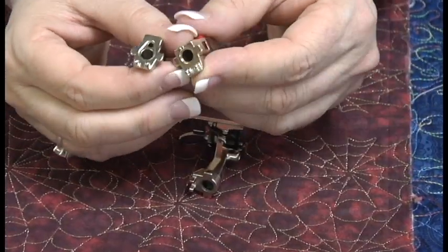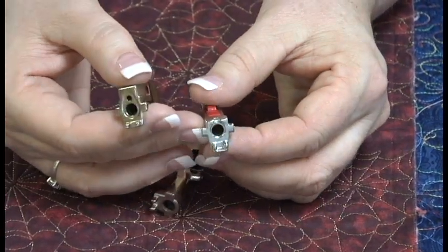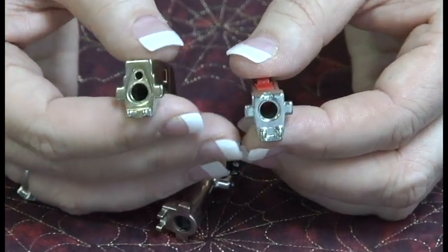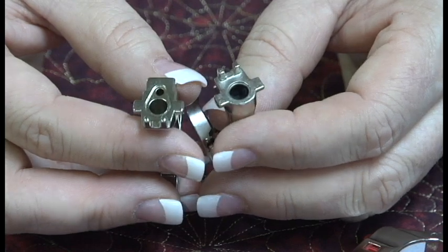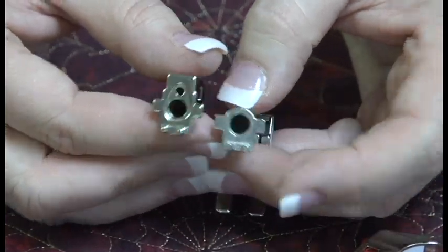All right, on the Bernina I wanted to show you one more thing. This is the new style snap-on again—that's for the new 830s, the 180s, the 200s, the 440s, those machines. But on the old style, I looked at some of my old feet and I noticed not only do you have this option where it's round, but you also have this option that's flat.